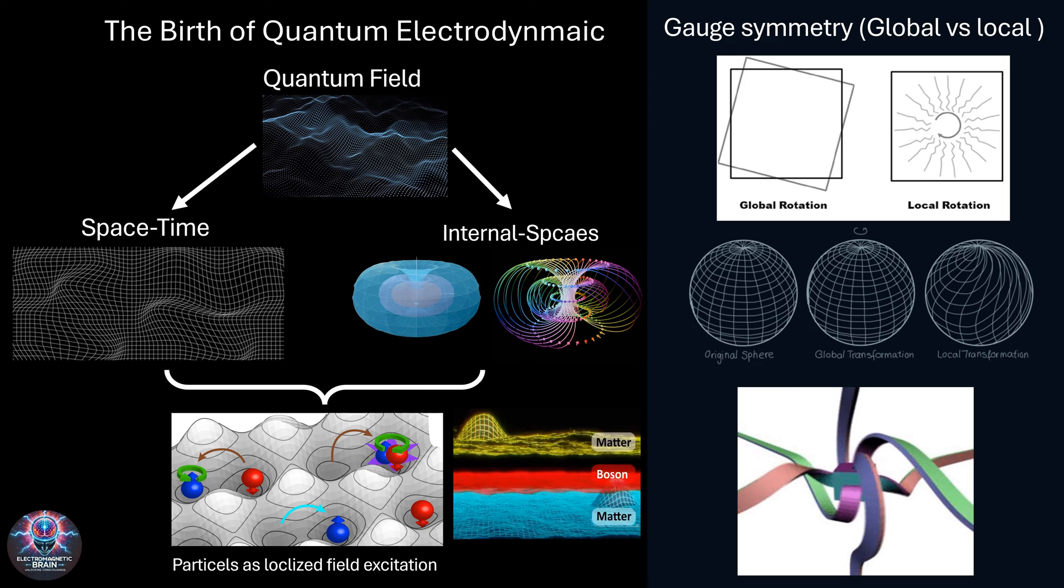Now, here's where it gets truly fascinating. Gauge symmetry, one of the most powerful ideas in modern physics, explains why the laws of nature stay the same even when we change our mathematical perspective. In simple terms, it's the hidden order behind how forces work. Imagine rotating an object in space, it looks the same from every angle, that's global symmetry. But now, imagine twisting different parts independently, this is local symmetry, and it's far more powerful. It's what gives rise to the photon, the fundamental particle of light.